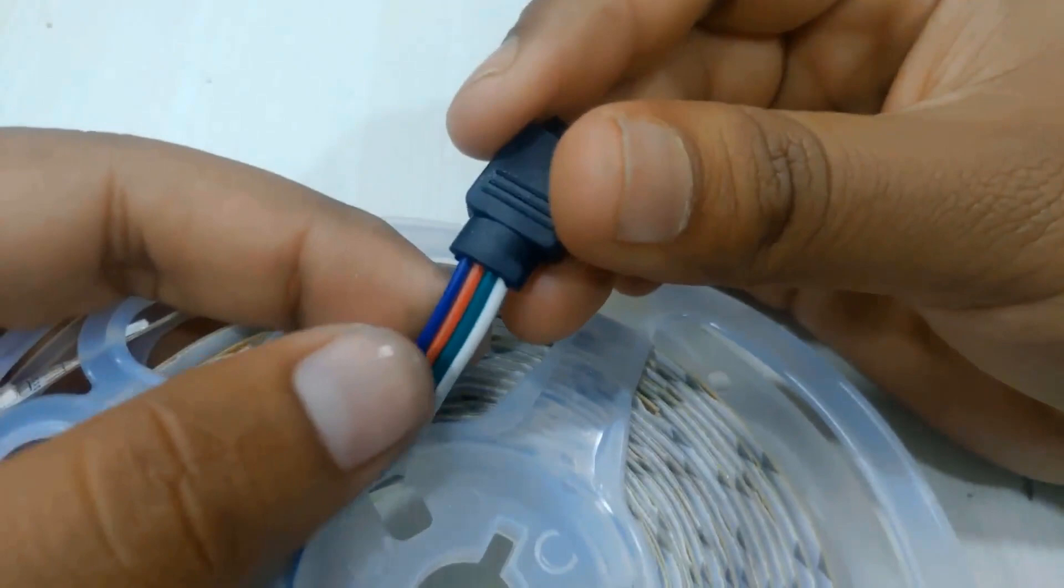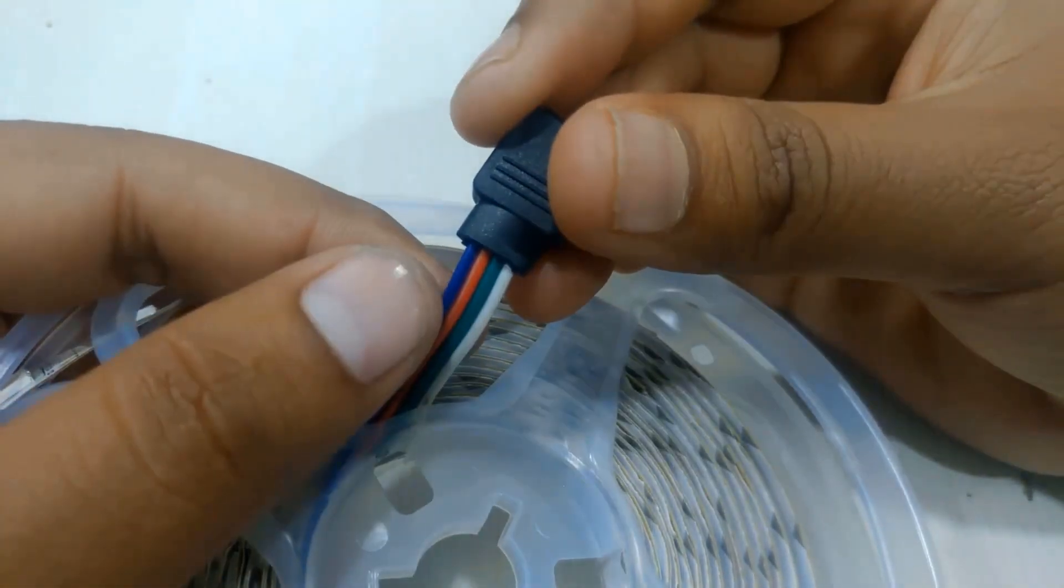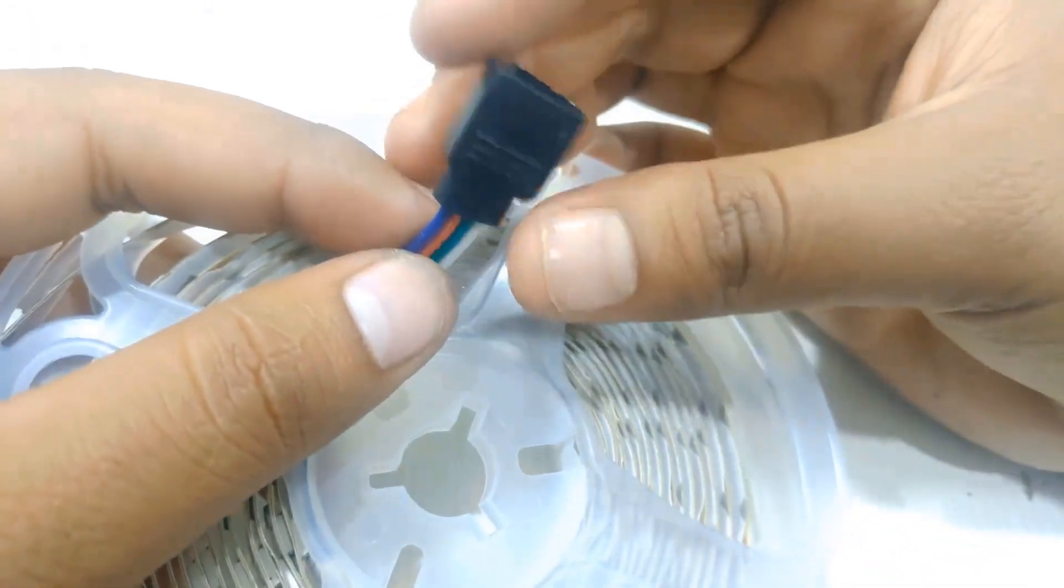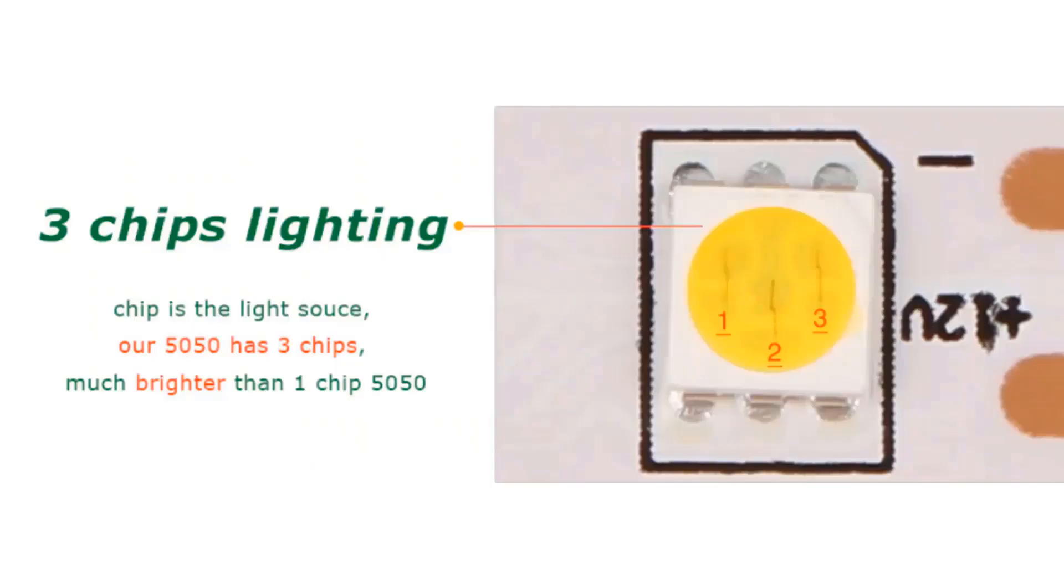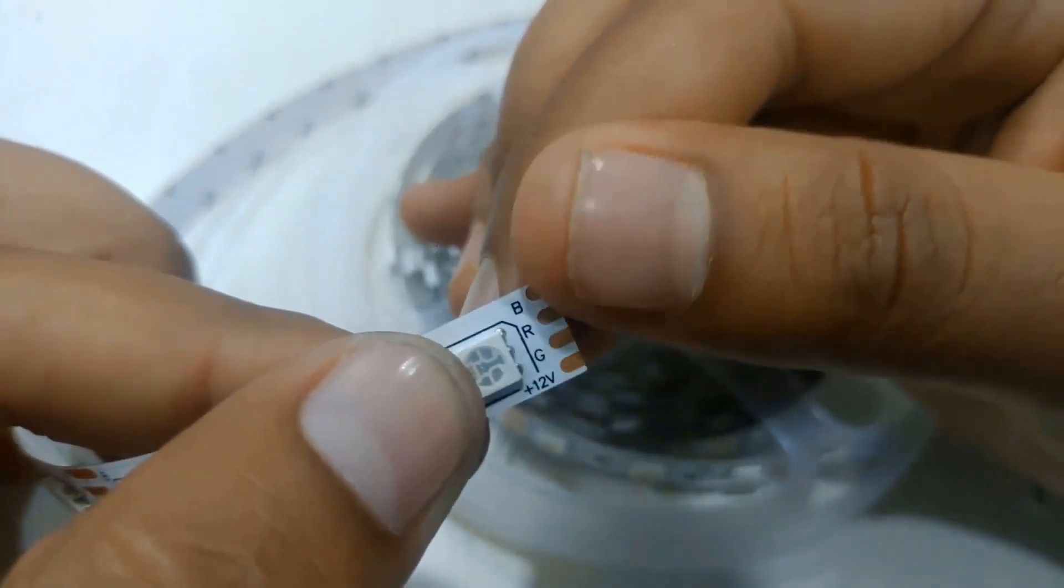It has four wires: white for 12-volt VCC, and red, green, blue wires which need to be grounded using microcontroller digital pins. The SMD 5050 package chip is the light source. This 5050 has three chips for RGB colors, so the brightness is too high compared to single chip.